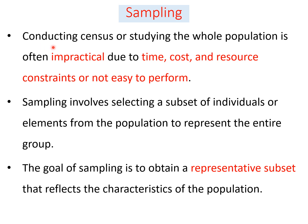Conducting a census or studying the entire population is often impractical because of time constraints, cost constraints, and in general resource constraints. It is not easy to consider the entire population for our examination. Due to that reason, sampling is the best option.